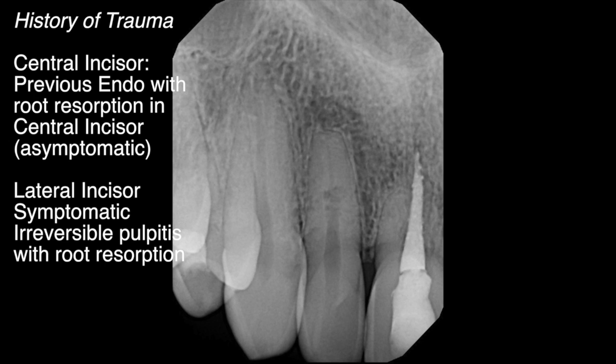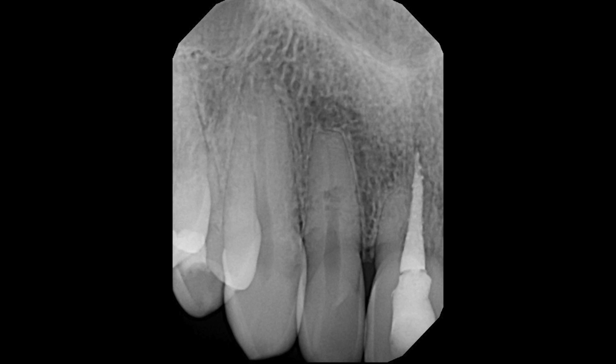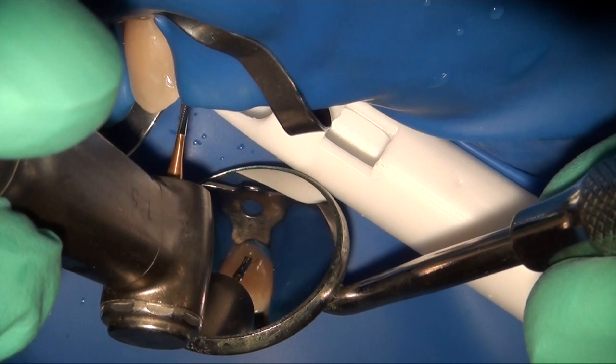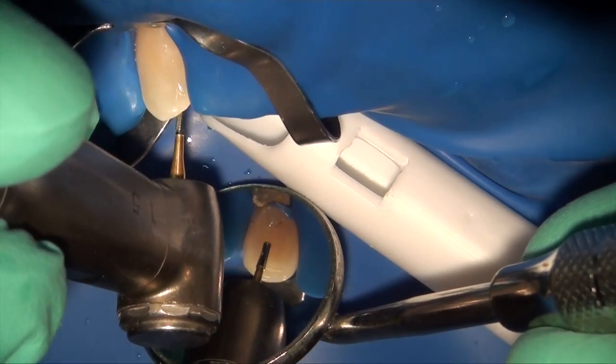There is no probing, no percussion sensitivity, but there is increased thermal sensitivity that lingers. The diagnosis is symptomatic irreversible pulpitis. We begin by using a radiograph to make an estimated working length — in this case approximately 22 millimeters — and then proceed to axis preparation.